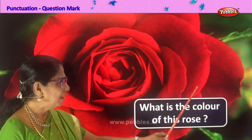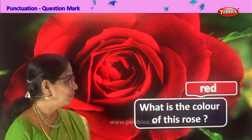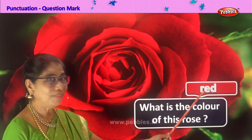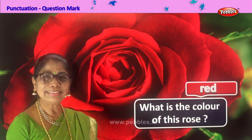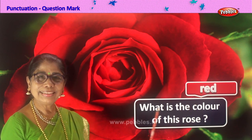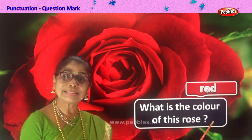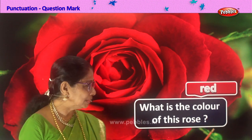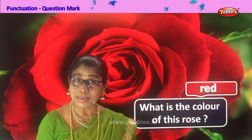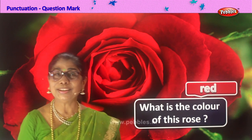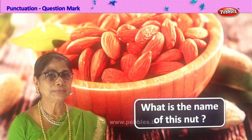How do you spell red? R-E-D, red. Good. So you write here 'red.' The sentence begins with a capital letter. This sentence is asking a question, so we put the question mark. Are you enjoying this? Good. Let's go on to a new picture.